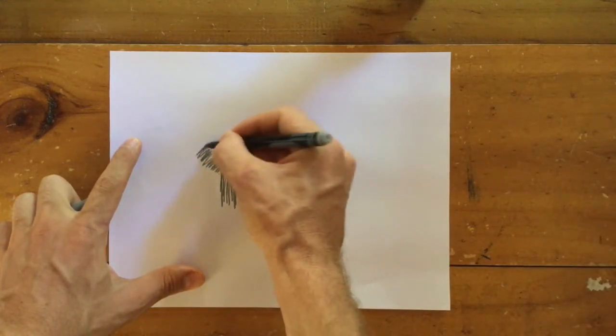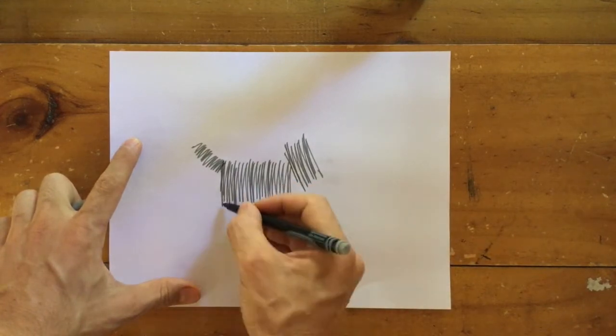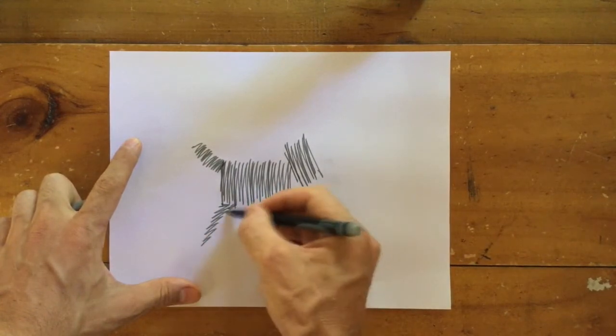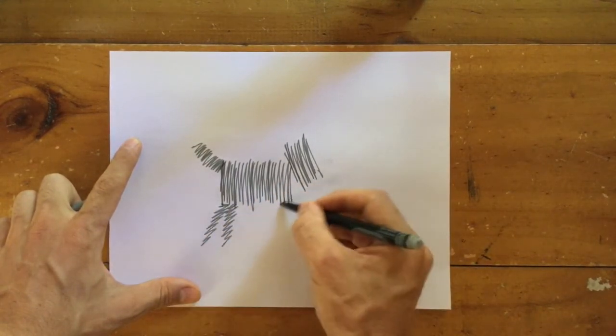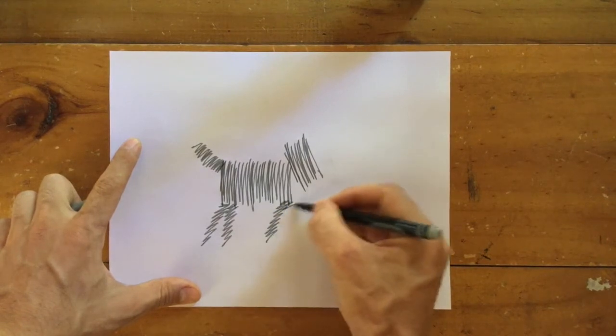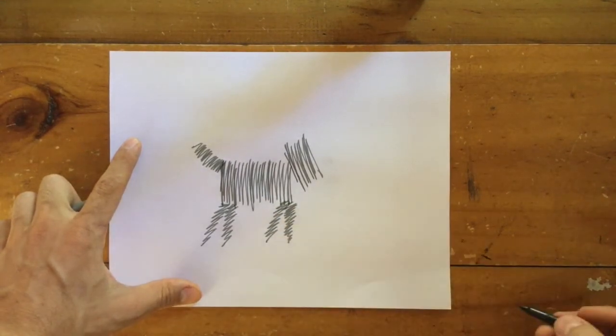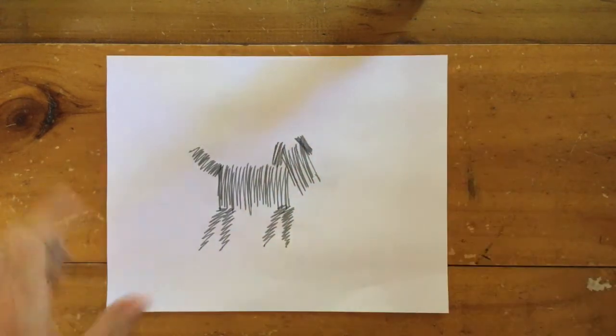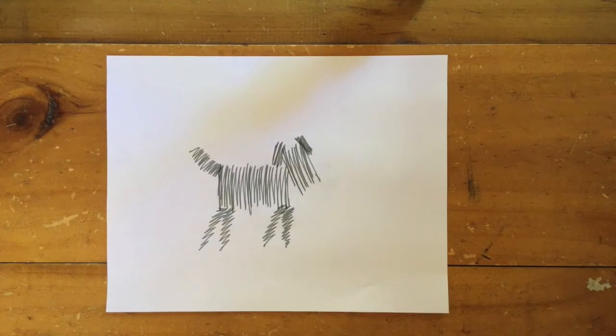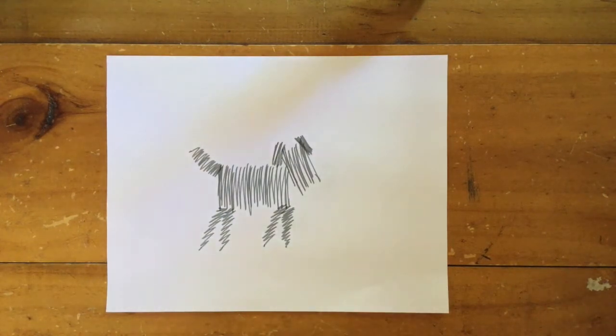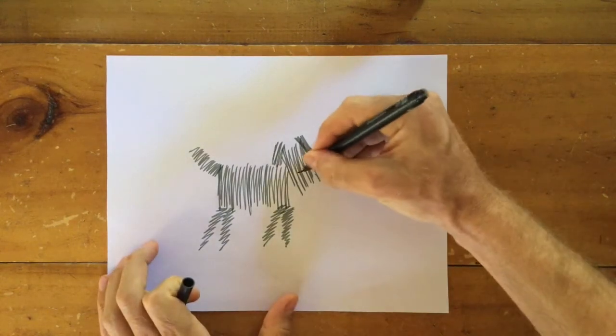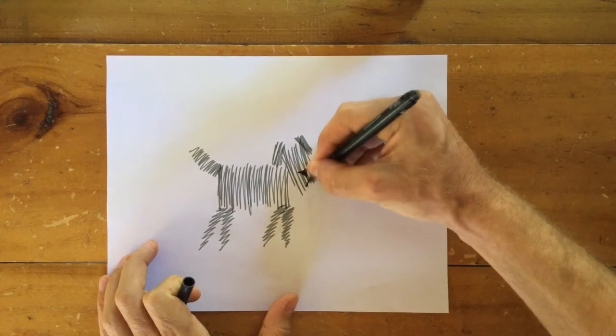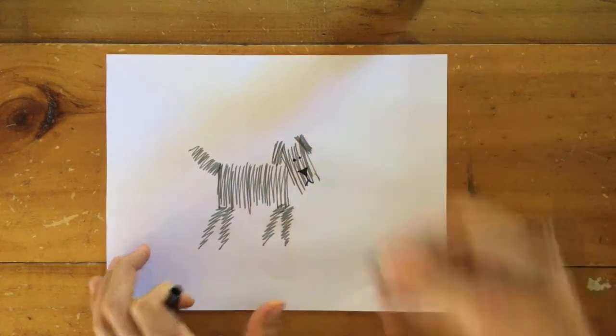And then also here. And here. And then the last one's here and here. We're going to finally add a triangle. And there we go, a scruffy dog.